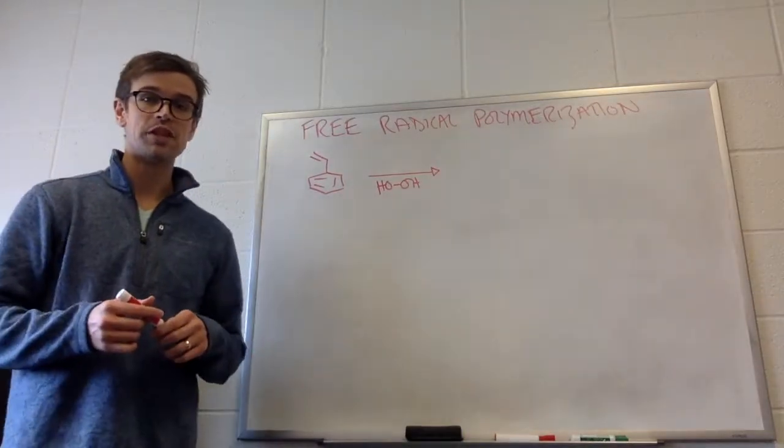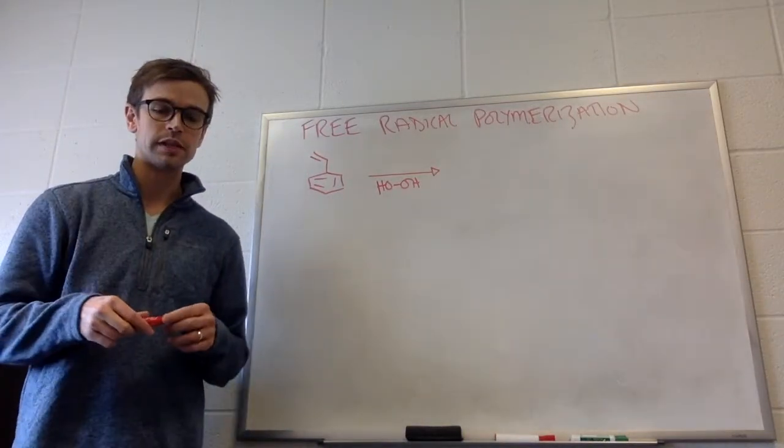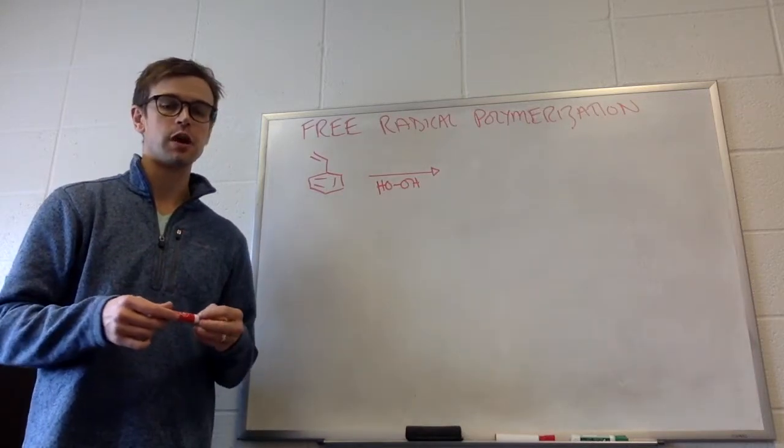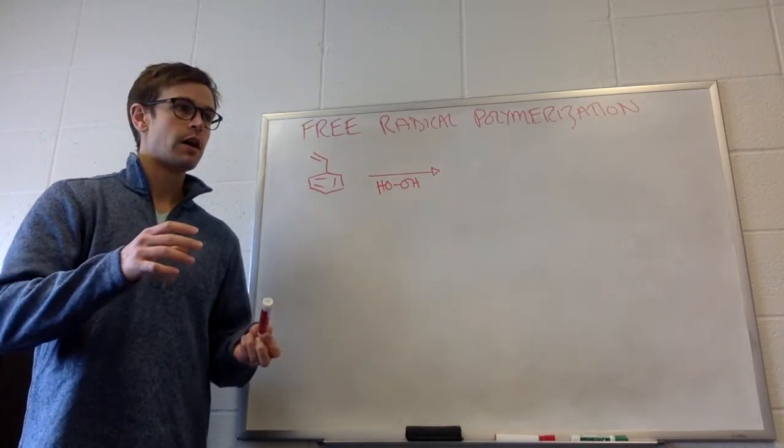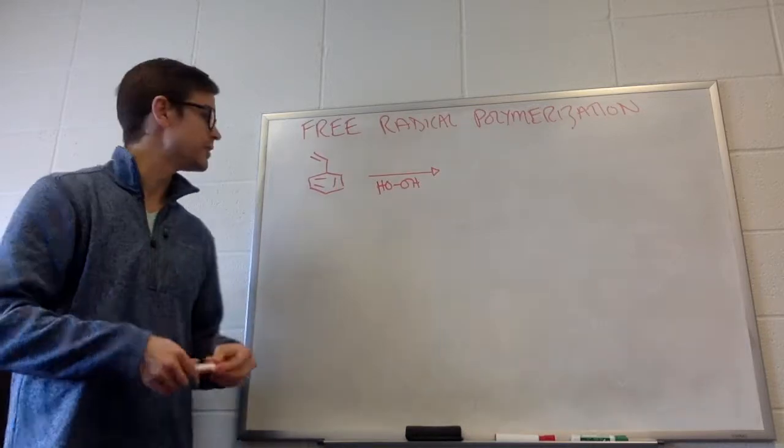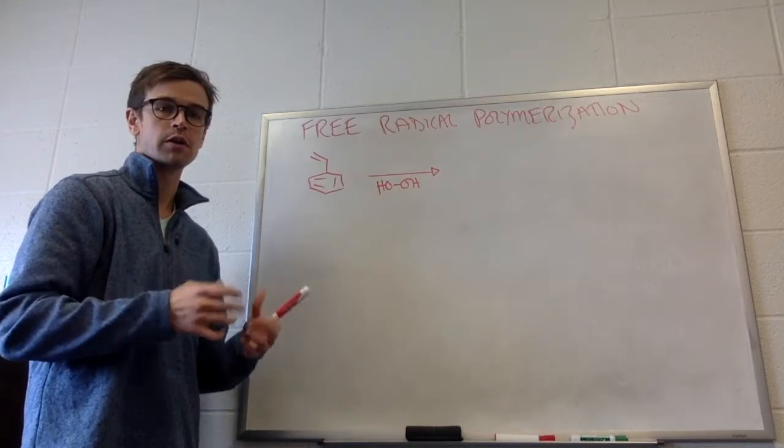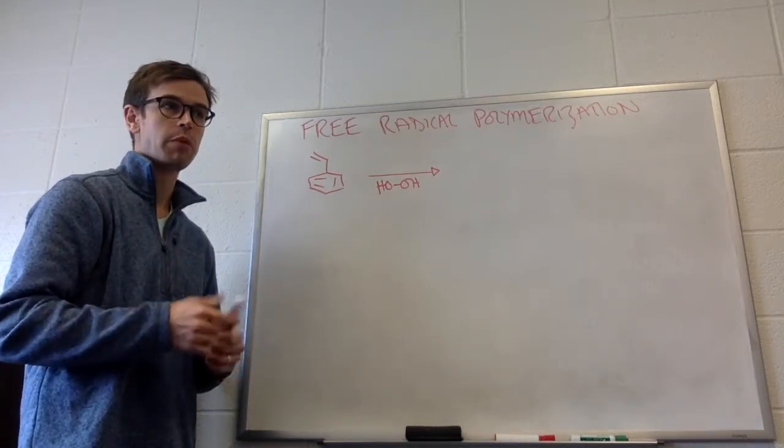The last concept of this chapter is free radical polymerization, and it looks very similar to free radical addition of HBr to alkenes because it includes peroxides and also addition of molecules to pi bonds.